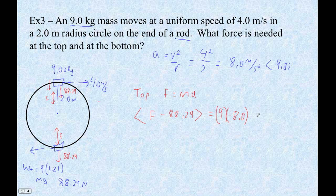Okay, and then we can solve that 9 times negative 8 plus 88.29. You get 16.29.